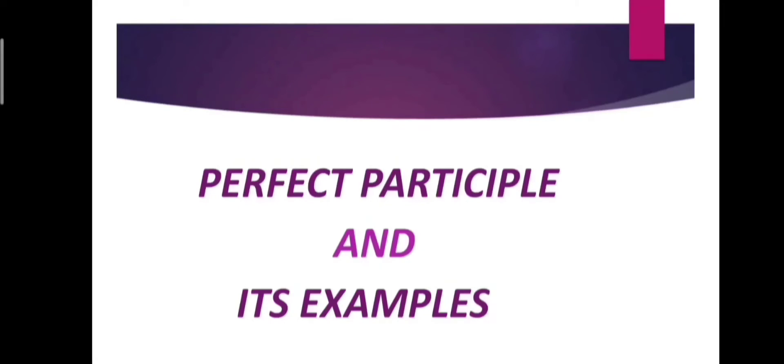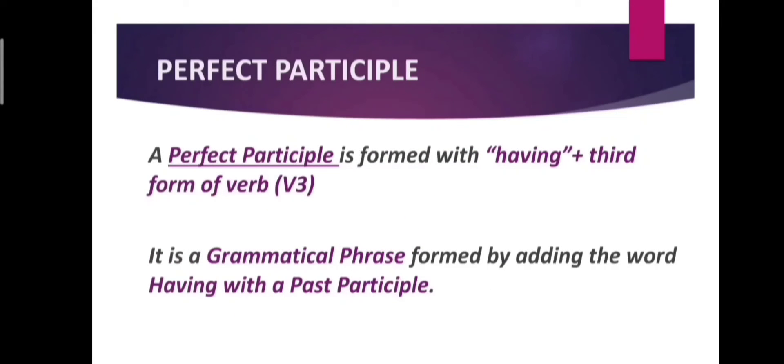The third one is perfect participle. Let's study it with its examples. A perfect participle is formed with having and third form of the verb.